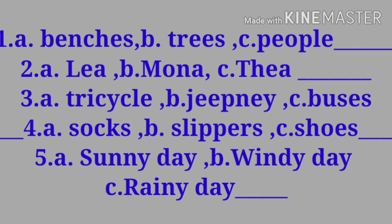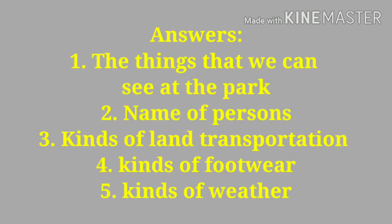Are you ready to check your answers? Let us check your answers. Number one: the appropriate heading is 'things we can see at the park.' The things we can see at the park are benches, trees, people. Let's now move to number two. What is the appropriate heading for the following names: A. Leia, B. Mona, C. Theia? These are names of persons, so the appropriate heading is 'names of persons.'